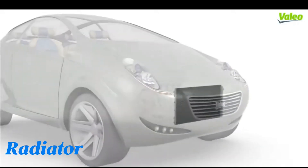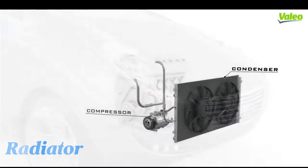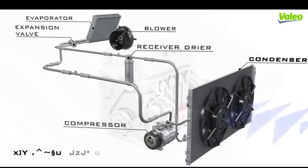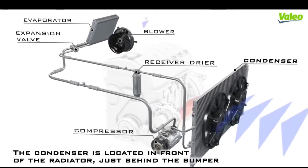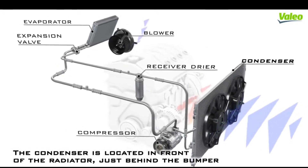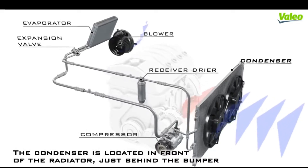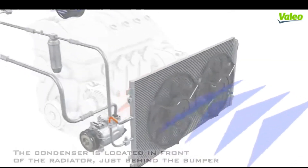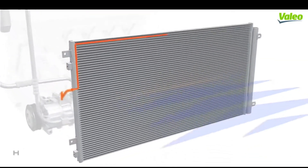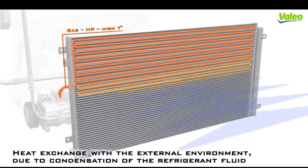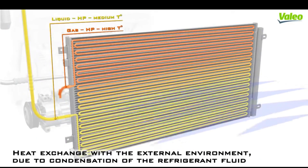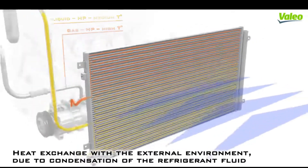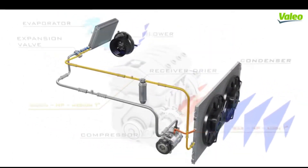The radiator is a heat exchanger having narrow pipes through which coolant passes. Numerous aluminium fins surrounding the pipes increase the surface area for heat dissipation. As hot coolant from the engine flows through the radiator, the moving air absorbs and carries away excess heat, sending cooled fluid back to prevent engine overheating.